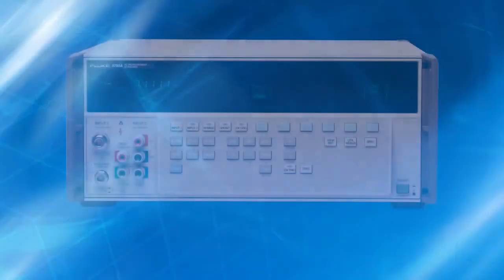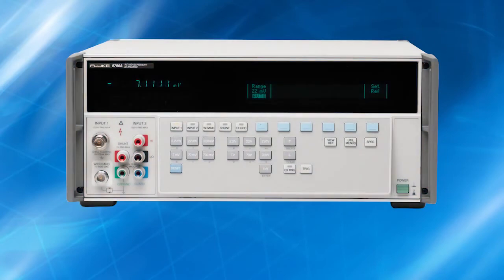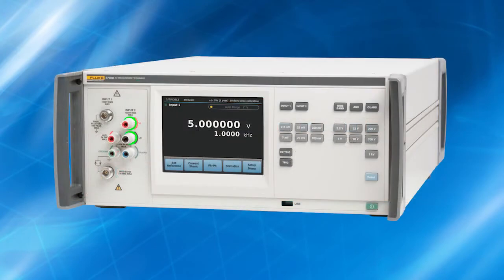The 5790B has a 5790A emulation mode, so you can replace an existing 5790A by just swapping in the new unit.